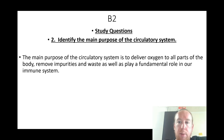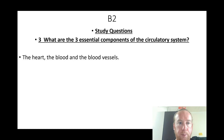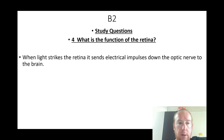Identify the main purpose of the circulatory system: to deliver oxygen to all parts of the body, remove impurities and waste, and play a fundamental role in the immune system. The three essential components of the circulatory system are the heart, the blood, and the blood vessels.